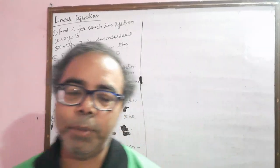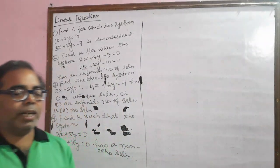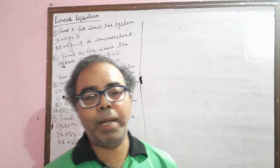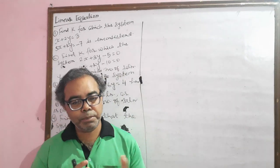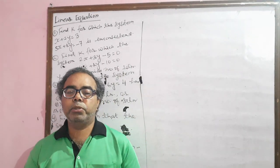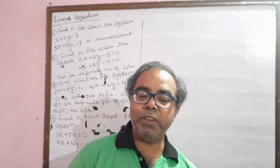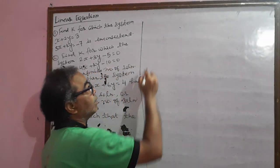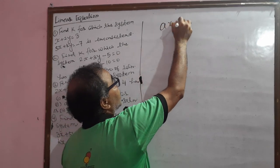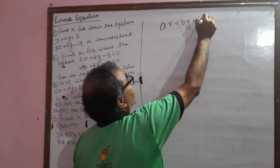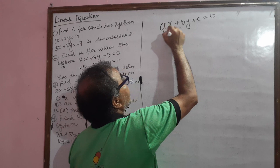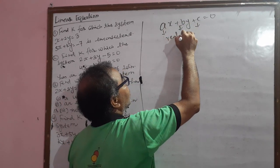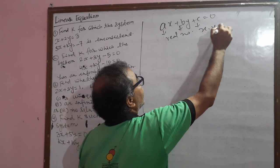Good morning. We are discussing the board mathematics. This is one of the important chapters for the board examination as well as the backfield examination, and for the board mathematics papers also. We are discussing the linear equation of two variables. First, we understand what is the linear equation. The form of the linear equation is ax plus by plus c equal to 0, where a, b, and c are real numbers and x and y are the variables.